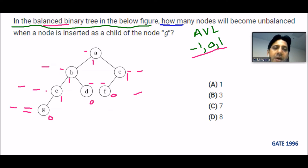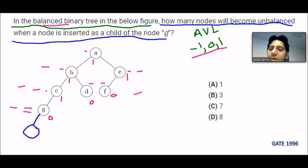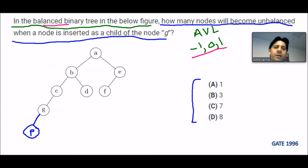Moving further — the question asks: how many nodes will become unbalanced when a node is inserted as a child of node G? If we insert one more node, let's call it node P, as a child of G, how many nodes will become unbalanced? We need to find that out from the given options.